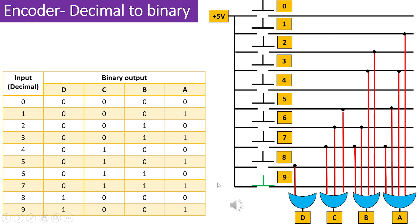Let's consider the case where we press switch 9, leading to the activation of the line on the opposite side of the switch and generating a logic 1. However, because the binary representation of decimal 9 is 1001 in a 4-bit format, the OR gates with their outputs labeled as input D and A are linked to the switch marked as 9. Consequently, when switch number 9 is pressed, the output changes to 1001.